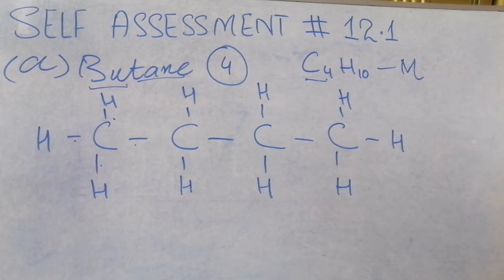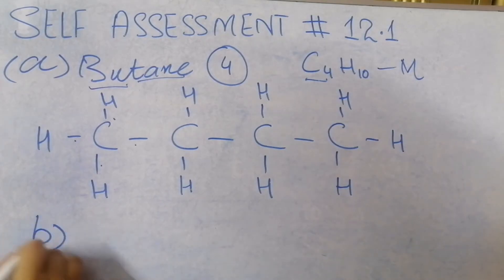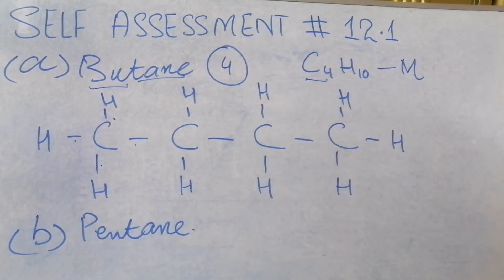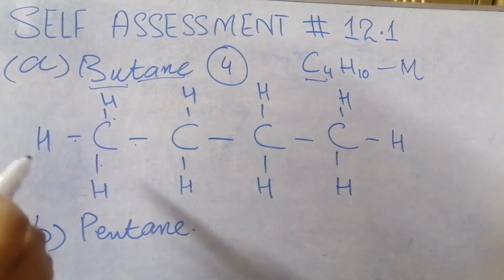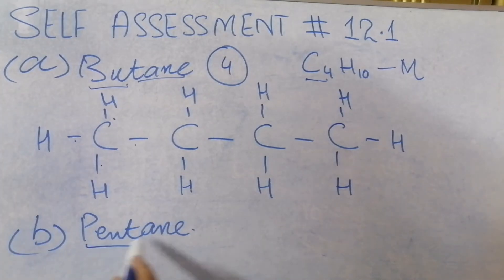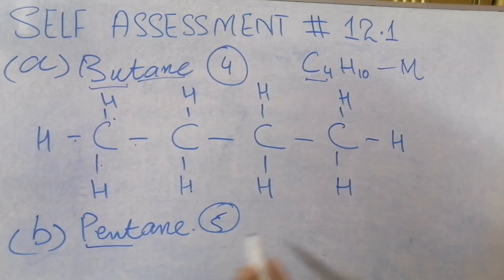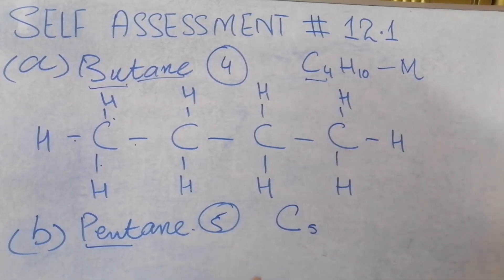Now we have the second one, which is pentane. What is pentane? First of all, you have to remember: butane has 4 carbon atoms, and pentane has 5 carbon atoms. These are things you have to memorize — you won't be told in the exam how many carbons each has. So for pentane, you know the carbon atoms are 5, not hydrogen.